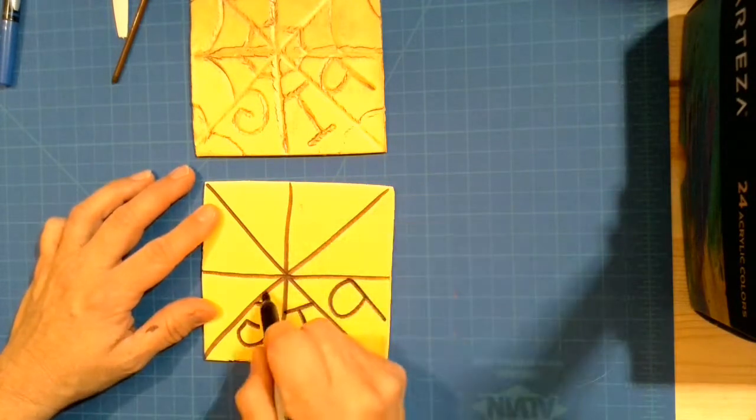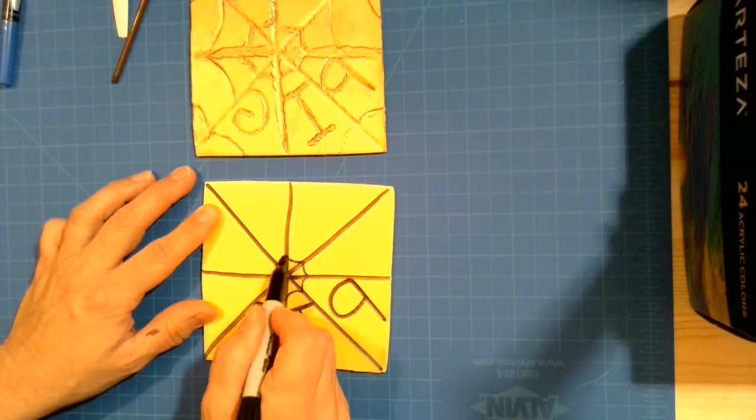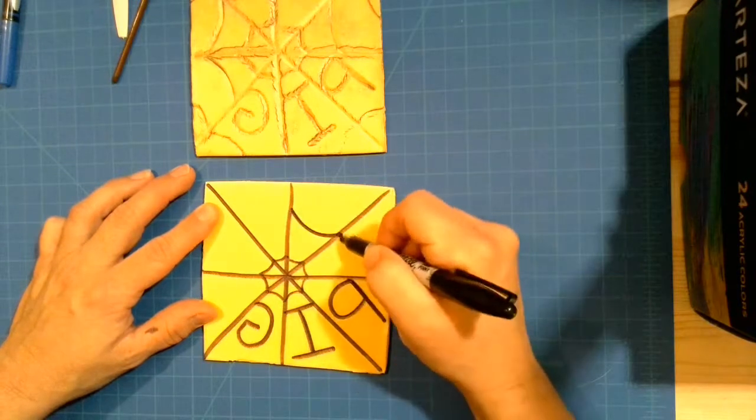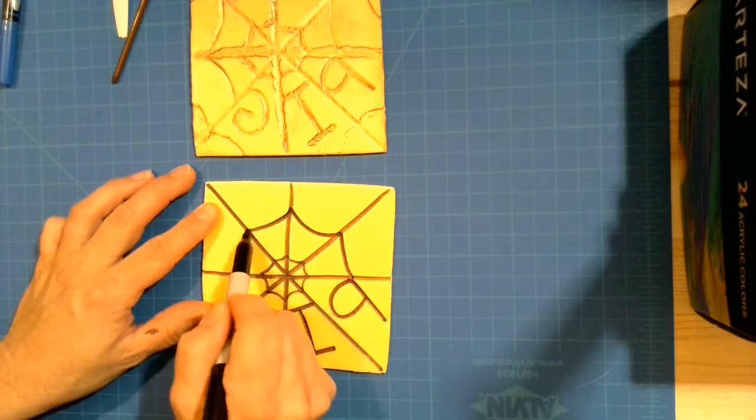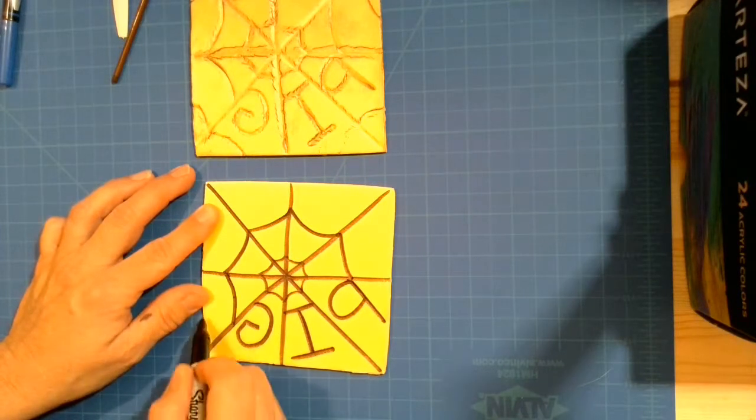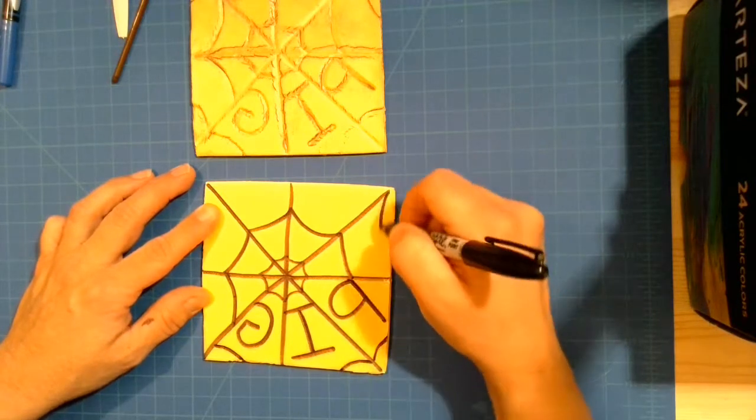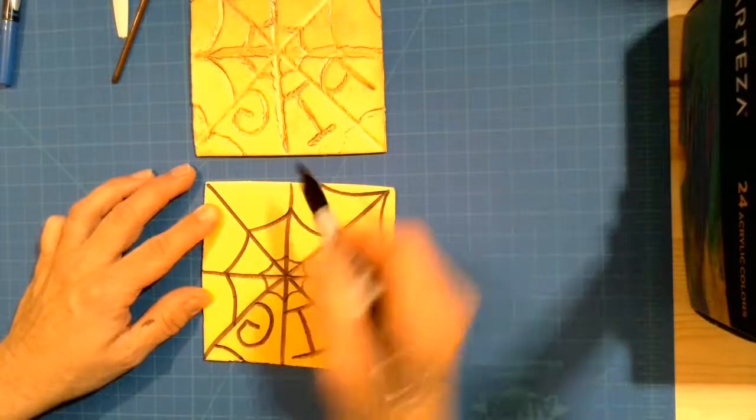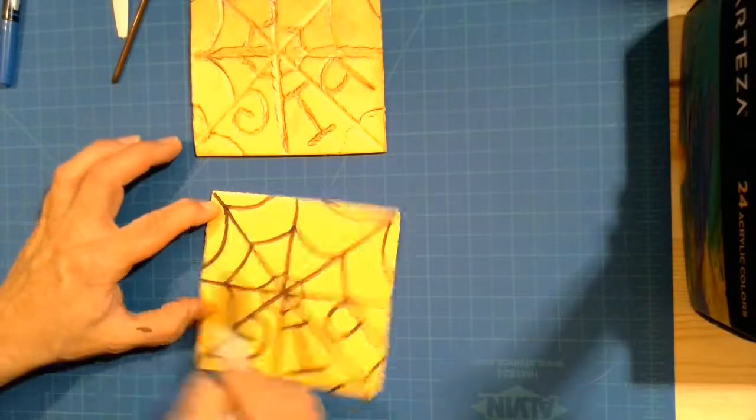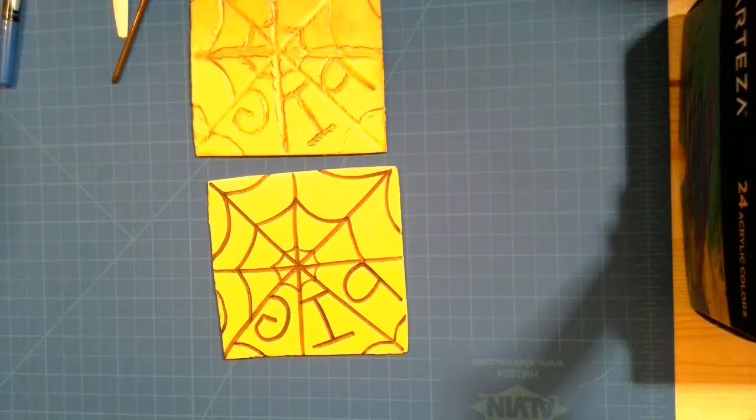The next thing I'm going to do is just draw where the lines of my spiderweb would go as they would go around the frame of the web. This is just a guide. So if you mess up it's not a big deal. And some of your lines may fall off of your square and that's okay too, it doesn't all have to fit on there.